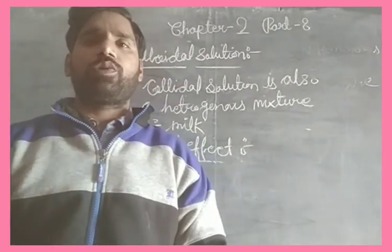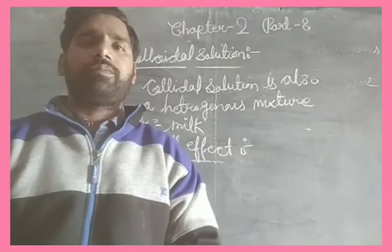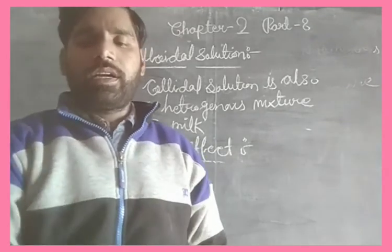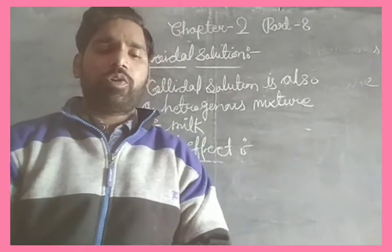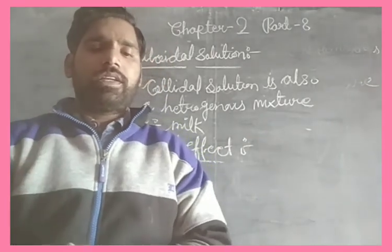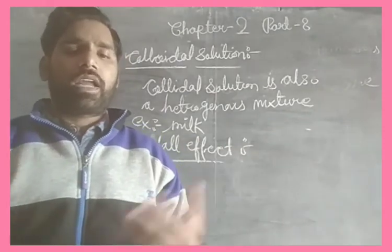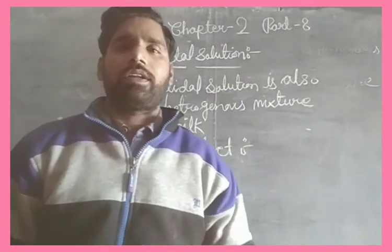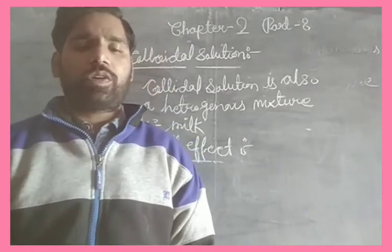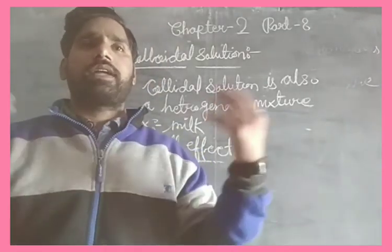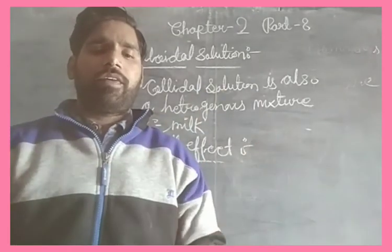The scattering of light through any medium is called the Tyndall effect. This can be observed when sunlight passes through the canopy of a dense forest — the light gets scattered. That is the Tyndall effect. Similarly, mist contains tiny droplets of water which also cause light scattering.